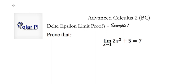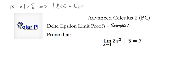We know that for every epsilon greater than 0, there must exist a delta greater than 0, so that for all x, whenever the absolute value of x minus a is less than delta, then we need it to imply that the absolute value of f(x) minus L is less than epsilon. It is only when all of that is true that we're able to say that the limit as x goes to a of f(x) is equal to L.